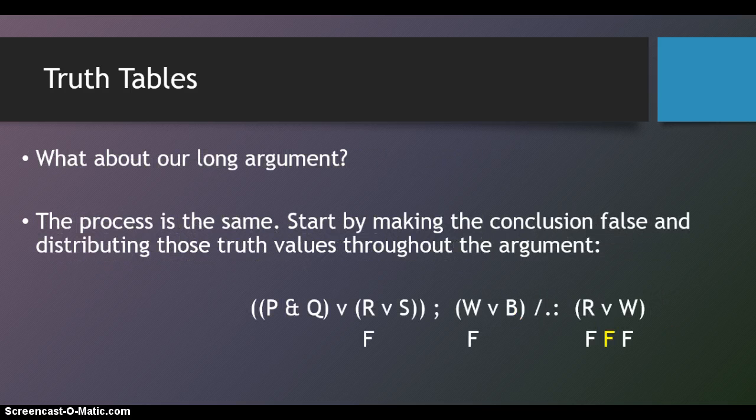Now, what about our long argument? The process is exactly the same. We start by stipulating, or forcing the conclusion to be false. We know that that's true in at least one possible world. And then we distribute those truth values throughout the argument. So, in order for R or W to be false, since it's a disjunction, we know that both disjuncts have to be false. So, R is false, and W is false, in order to make R or W false.